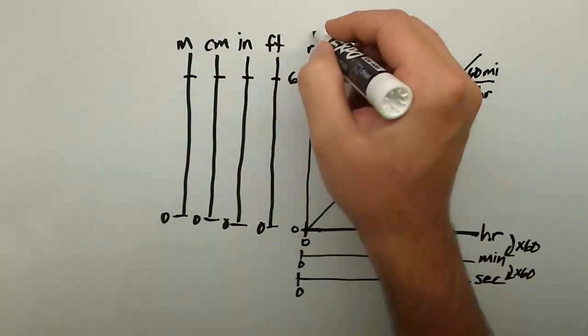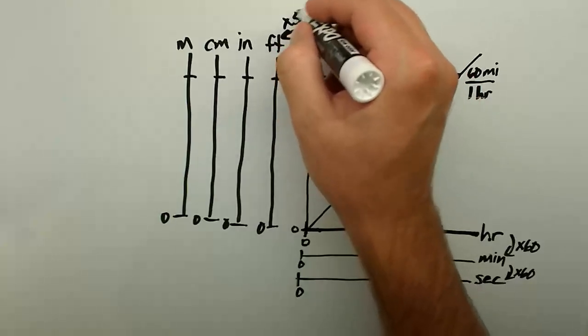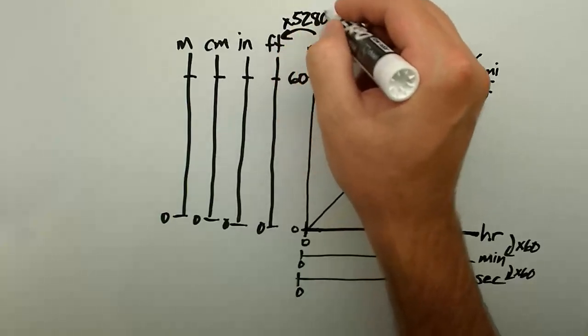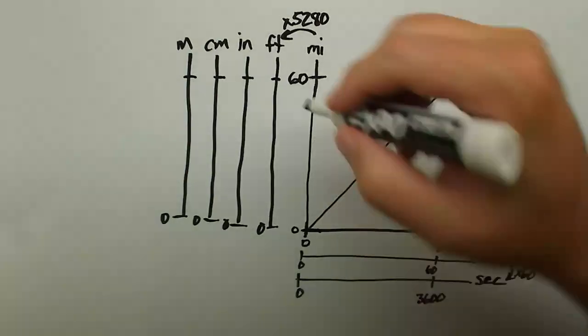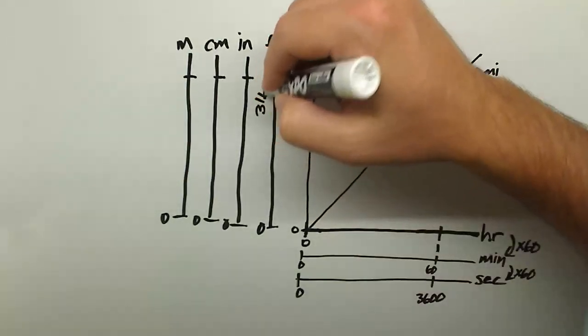Because there are 5280 feet in a mile, I multiply 60 by 5280 to get 316,800 feet.